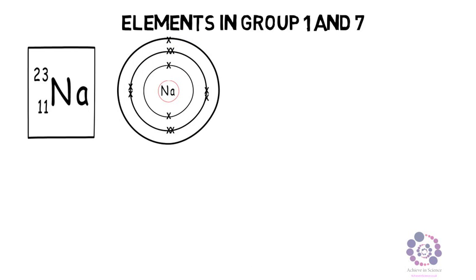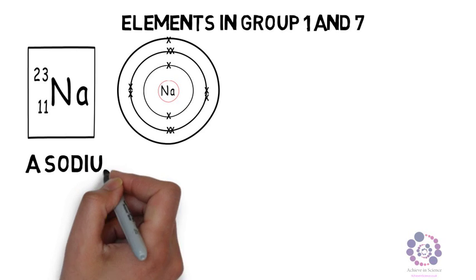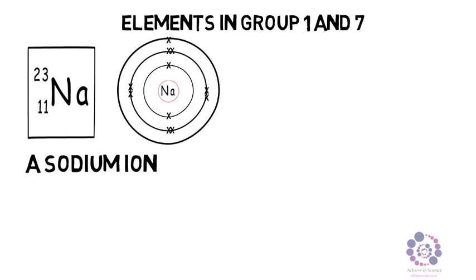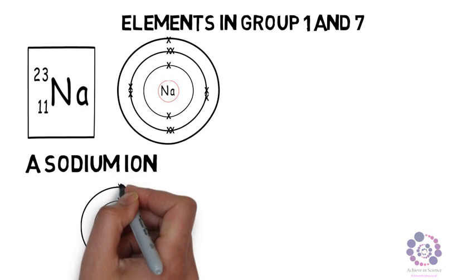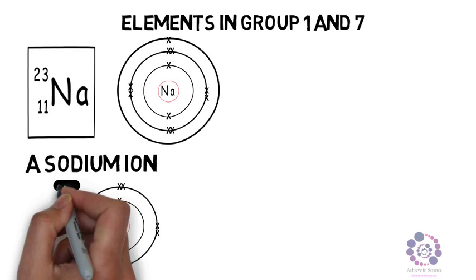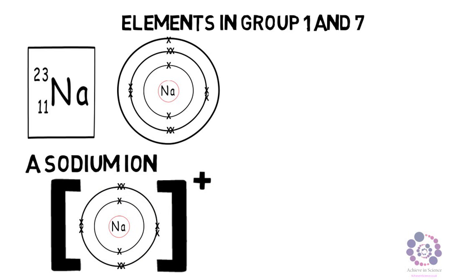This will form a sodium ion if it reacts. It will lose that one electron and have a full outer shell of 8, and therefore now form a positive ion, remembering that ions are shown in square brackets.